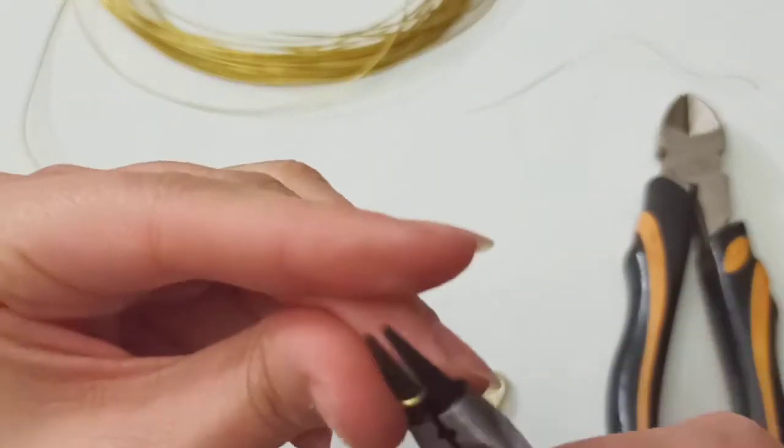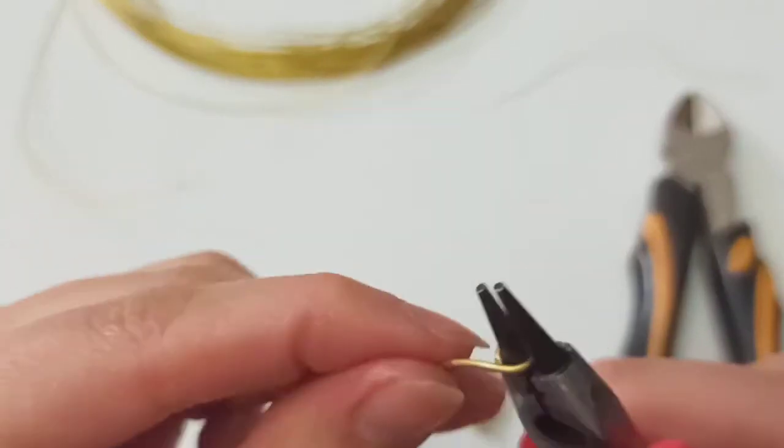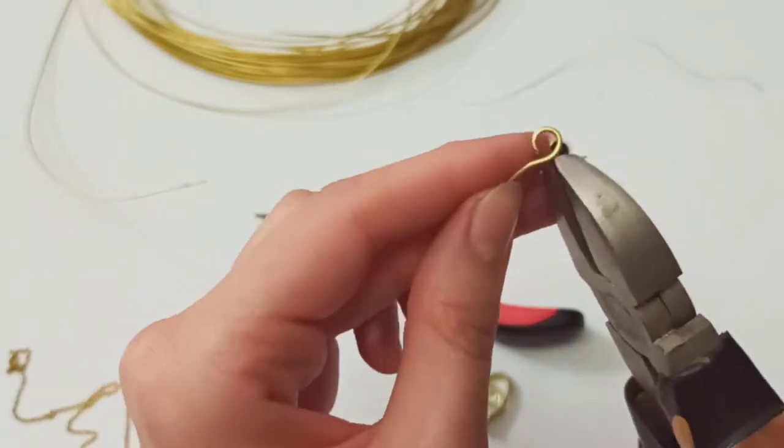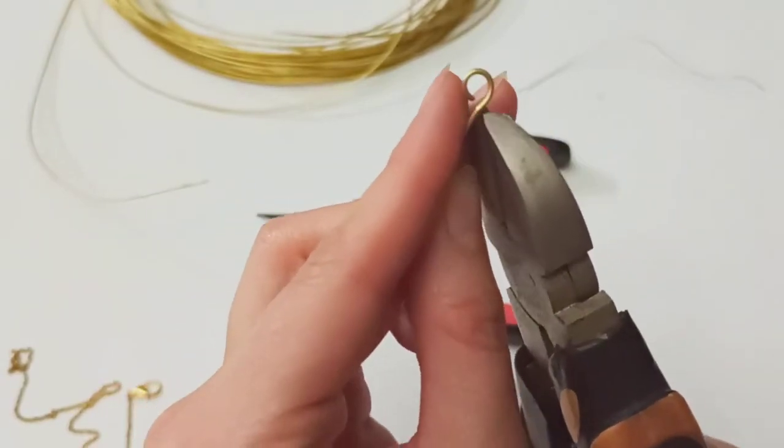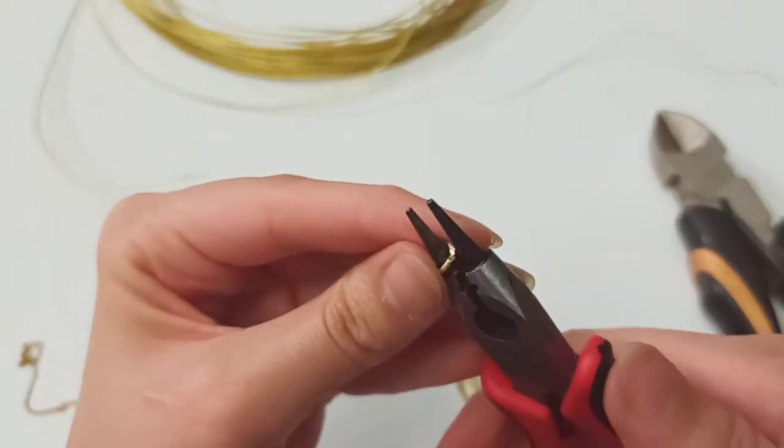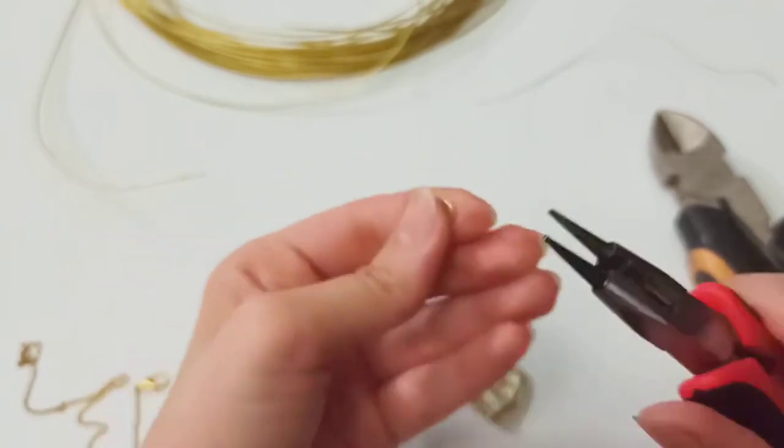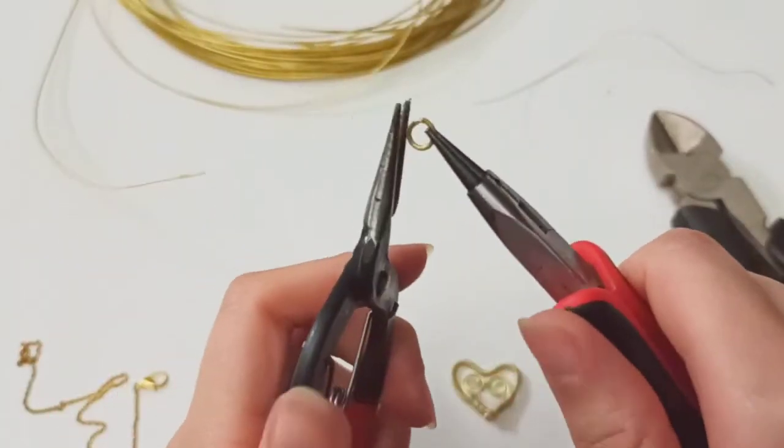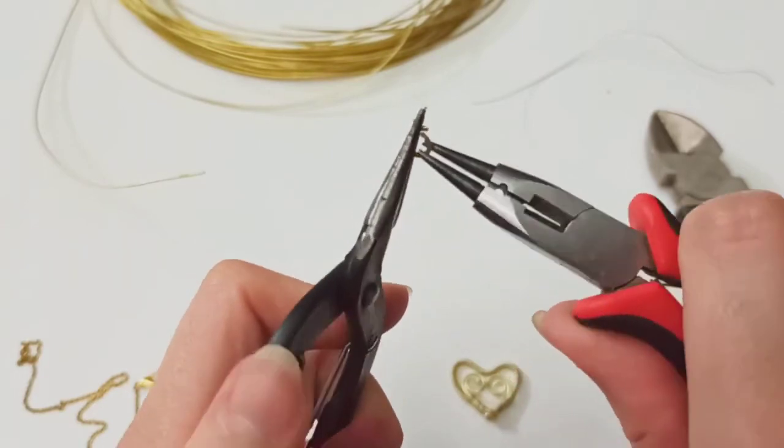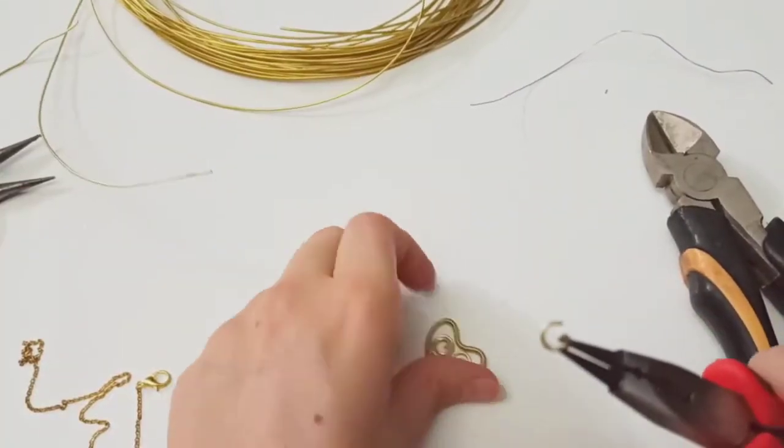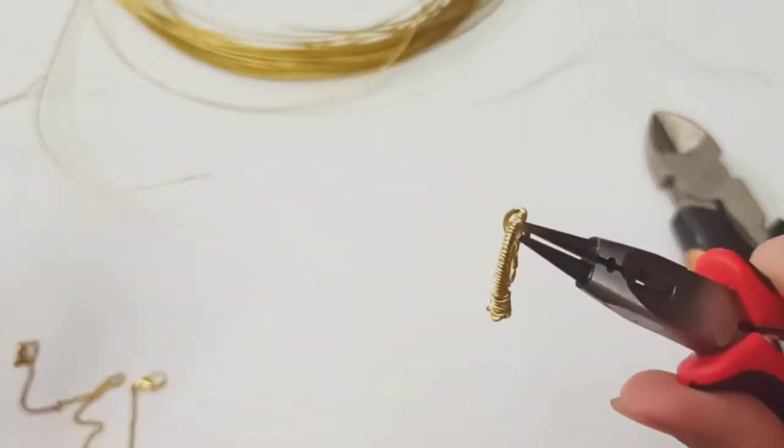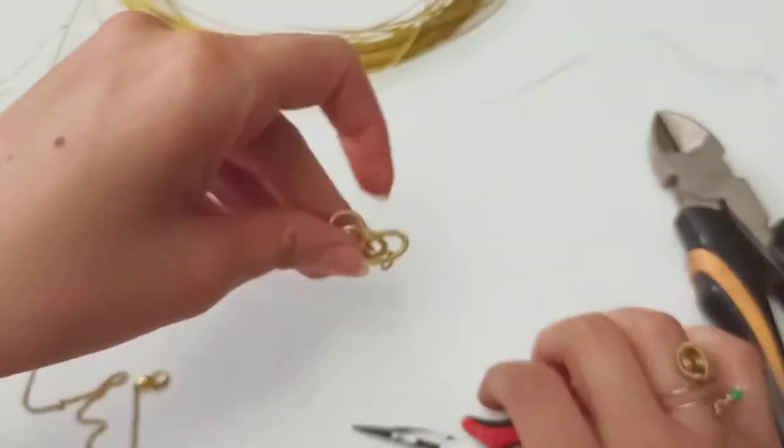And add our chain into that necklace. Do you remember how to make a jump ring? If you don't, just come back to the first videos. There I explained how to make a jump ring, and then insert the jump ring in and close it.